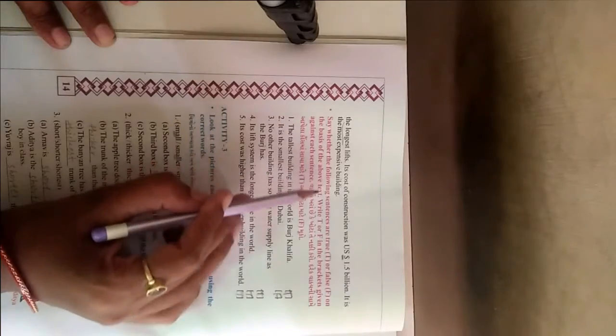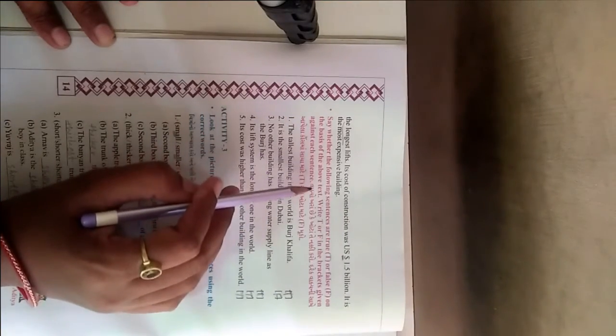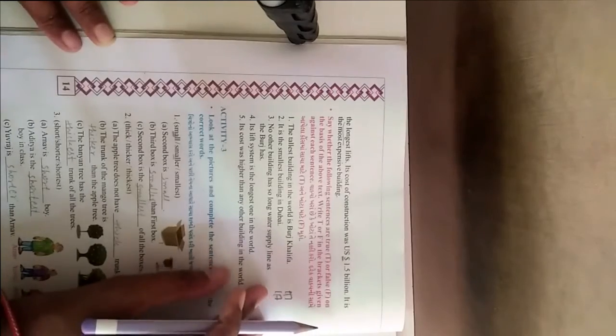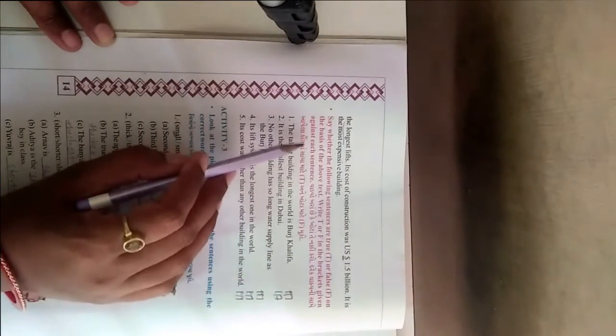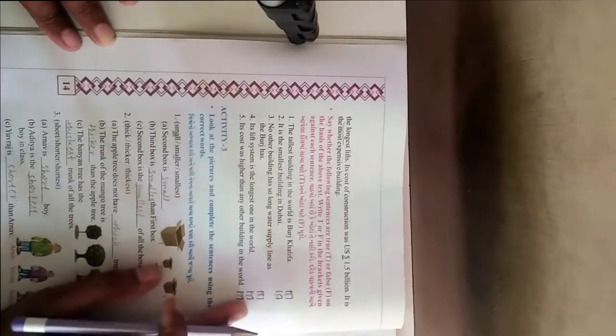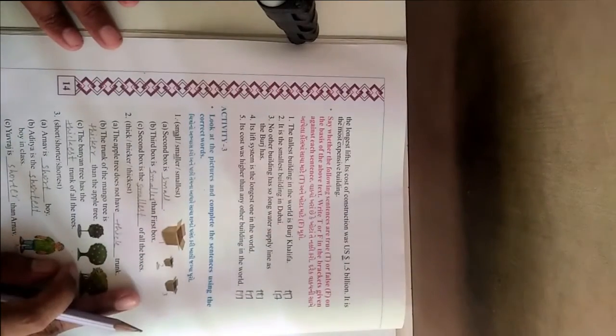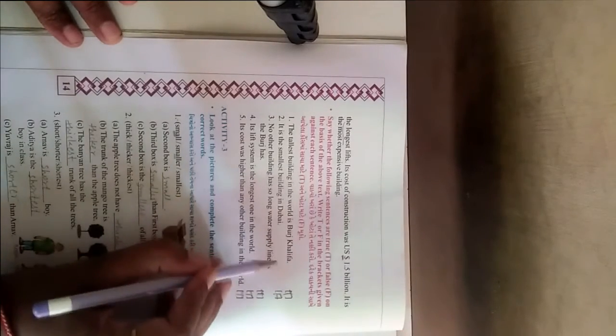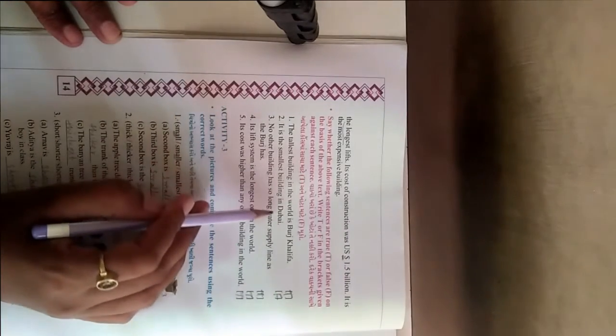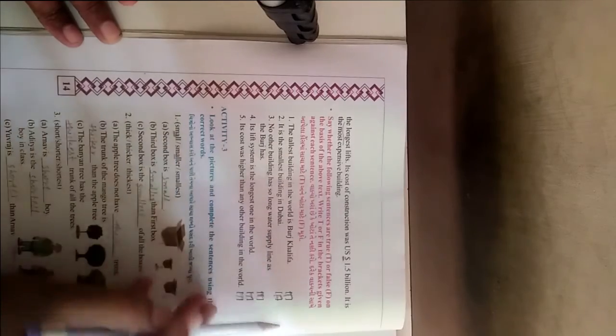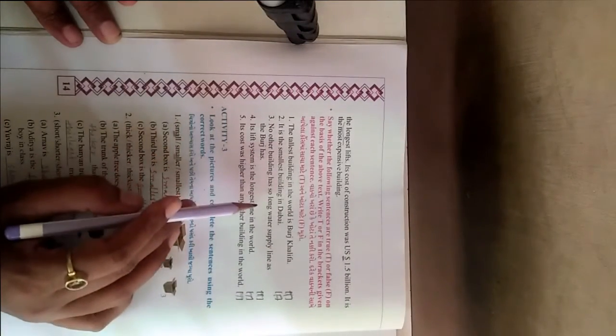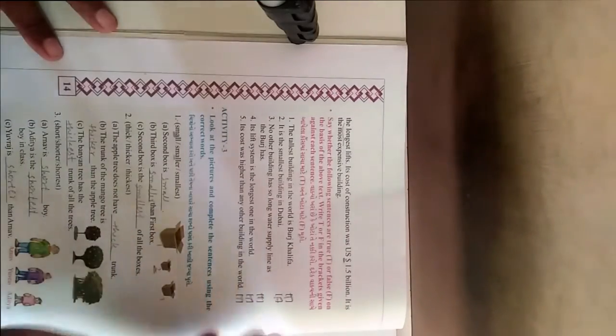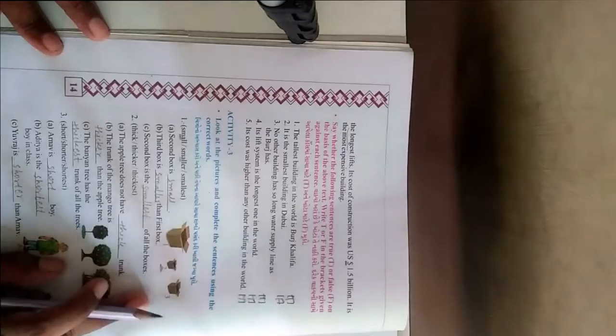Next one. See whether the following sentences are true or false on the basis of the above text. This is the smallest building in the world. The tallest building in the world is Burj Khalifa. It is the smallest building in Dubai. No, it's not small, it's very tall. So, false. No other building has so long water supply line as the Burj Khalifa. It's a true one.